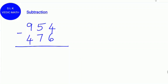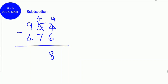Now we are going to verify our answer for subtraction operation using digital roots. We carry 1 from the next digit 5, so 4 becomes 14. 14 minus 6 is 8. We carry 1 again, so 4 becomes 8 — wait, 14 minus 7 is 7. And 8 minus 4 is 4.